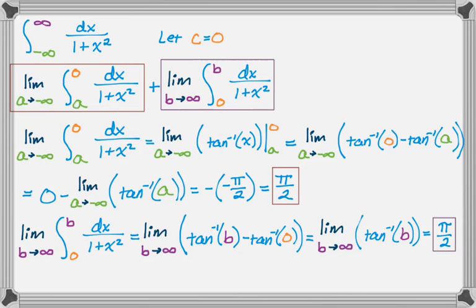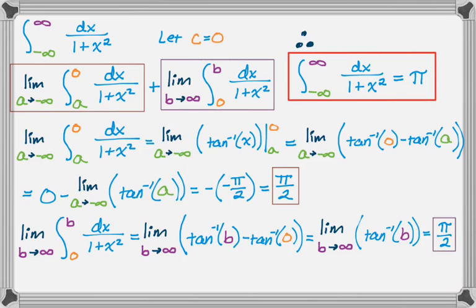So definitely go back and memorize that graph if you don't have it memorized. It's really useful. But anyway, this particular integral becomes the integral from negative infinity to infinity is the sum of those two numbers. So pi over 2 plus pi over 2, which is pi. So that's an improper integral that shoots off to negative and positive infinity but has a finite value, and the value turns out to be pi. Anyway, hope you found this helpful, and good luck.